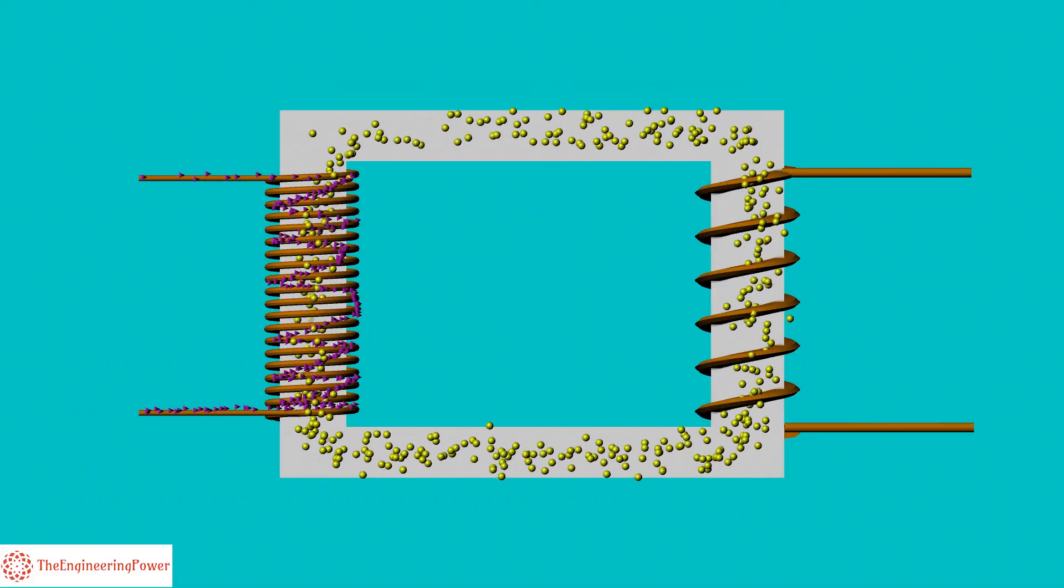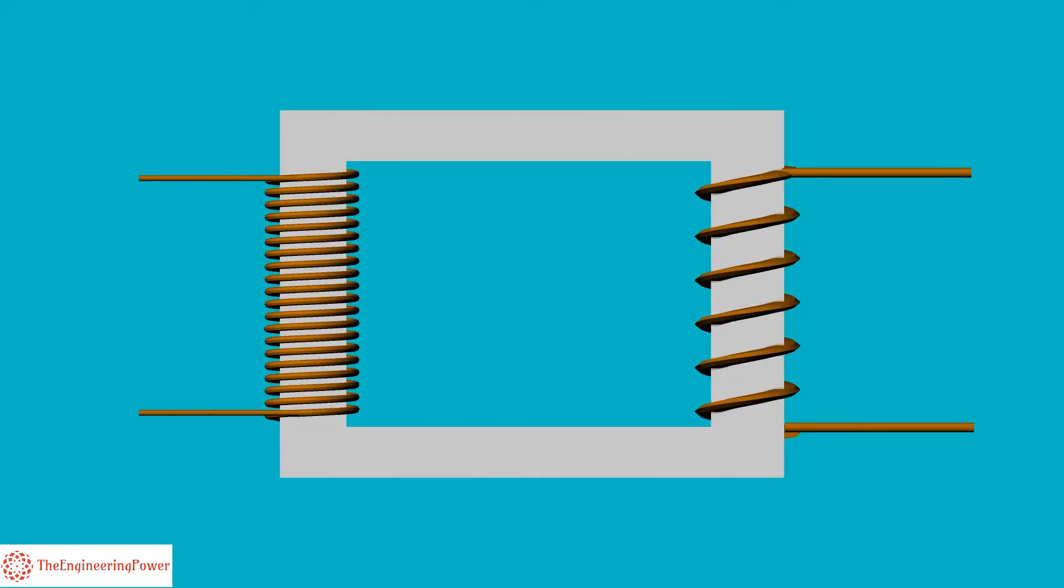This magnetic field induces voltage in the secondary windings. The primary and secondary of the PT are electrically isolated but magnetically coupled to each other.